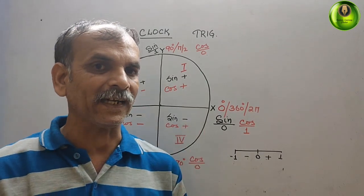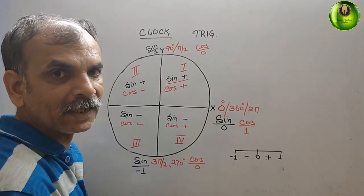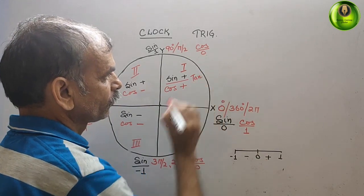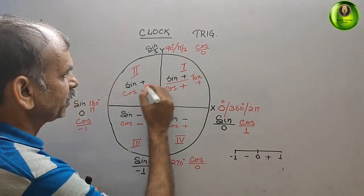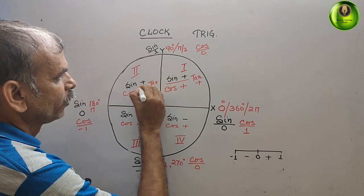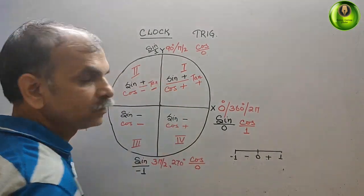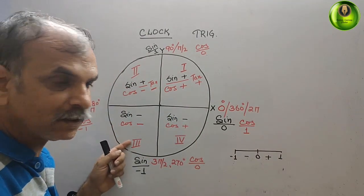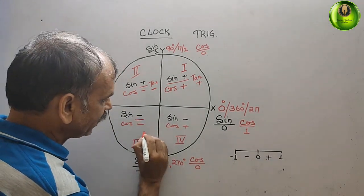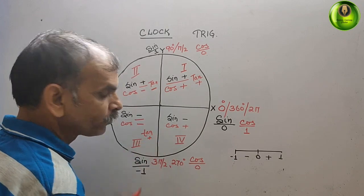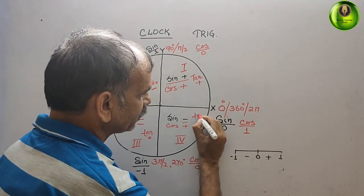If we go for tangent, we just have to divide sine by cosine — put a bar, that is tan. Positive divided by positive is always positive, so tan is positive in the first quadrant. In the second quadrant, positive by negative is negative, so tan is negative. In the third quadrant, negative divided by negative is positive, so tan is positive. In the fourth quadrant, negative by positive is negative, so tan is negative.